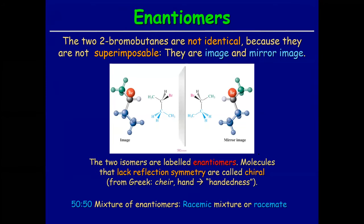So what are enantiomers? Enantiomers are when you have two molecules that are perfect mirror images of each other. So here you have carbon, methyl, bromine and hydrogen, and you have a perfect mirror image of it on the left.